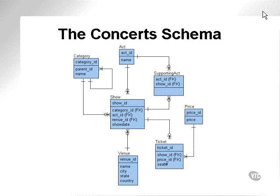Taking another look at the concerts schema, why would it make sense to create a Cartesian product, for instance, between the act, show, and venue tables? In other words, what I would do is I would select either specific columns or all columns from act, show, and venue without any where clause.